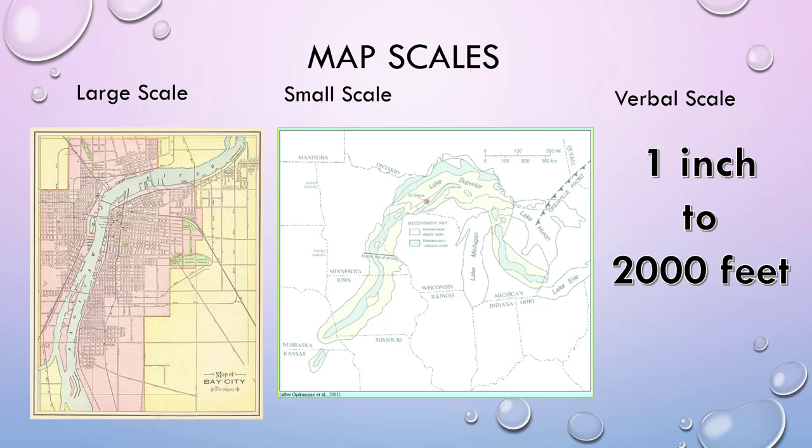Let's go on to map scales. This is another important part of physical geography because you're going to be looking at maps quite a bit, especially if you're using Google Earth. The scale of a map tells you the ratio between the units on the map and on the ground. If you had a one-to-one ratio, that's saying one centimeter on paper equals one centimeter on the ground — that's not useful. A more useful scale would be one to one million, because one million can be easily converted in metric.